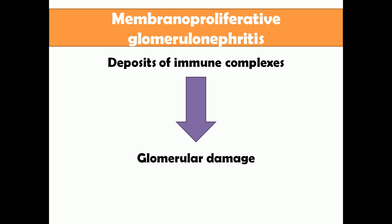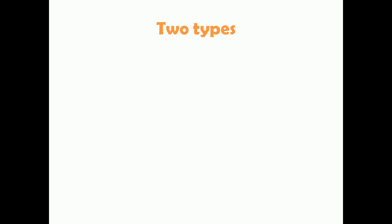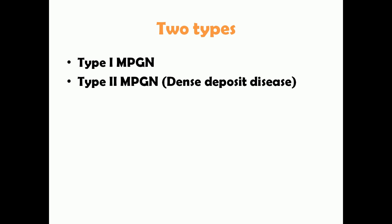There are basically two types of membranoproliferative glomerulonephritis: Type 1 and Type 2, which is also known as dense deposit disease. Type 2 is now considered an entirely separate disease from Type 1. The pathogenesis differs between the two, but the microscopic and clinical features are somewhat similar.